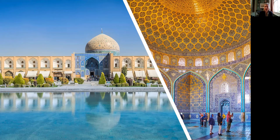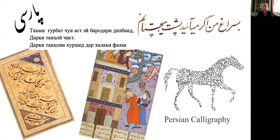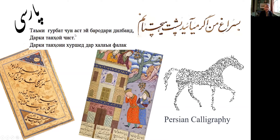Persian soon became the lingua franca of big swathes of this empire, particularly in Central Asia and the Indian subcontinent, where it was the official language of the Mughal court. Today, Persian is the official language of Iran, where locally it's known as Farsi. Alongside Pashtu, it is one of the two official languages of Afghanistan, locally known as Dari. And in Tajikistan, it's the official language known as Tajik. In Tajikistan, Persian is written in the Cyrillic, i.e. the Russian alphabet.